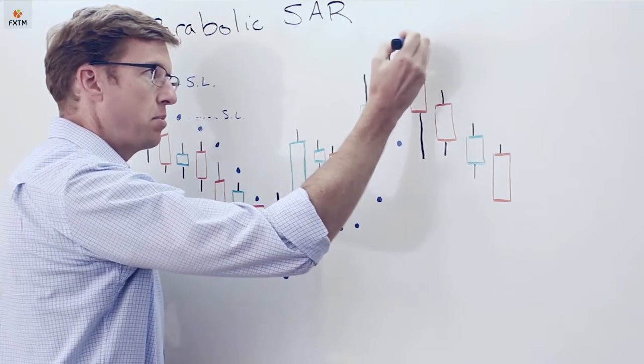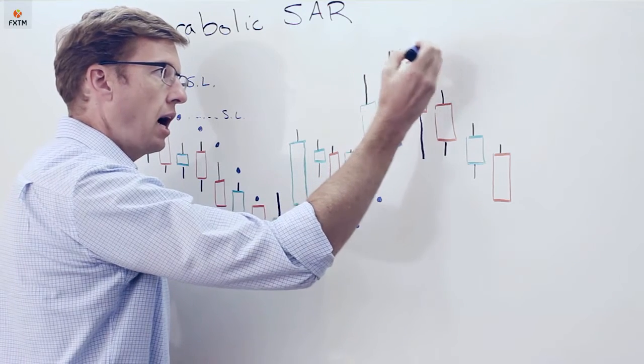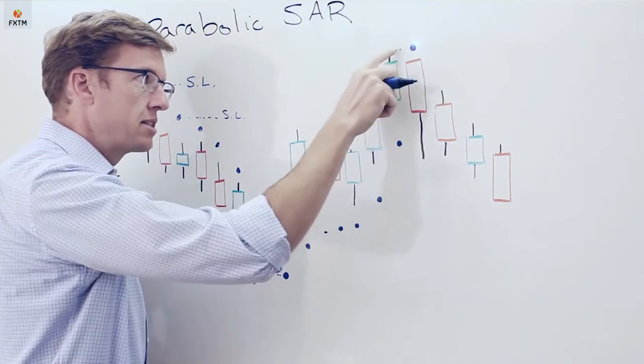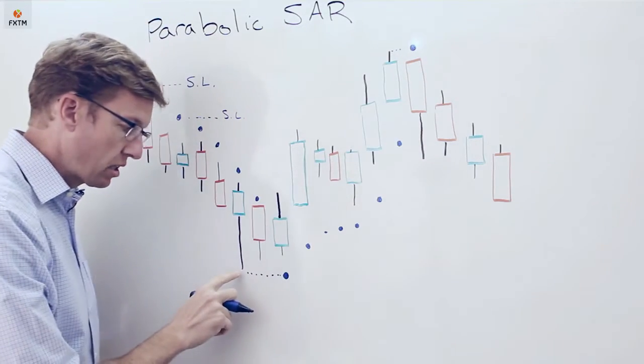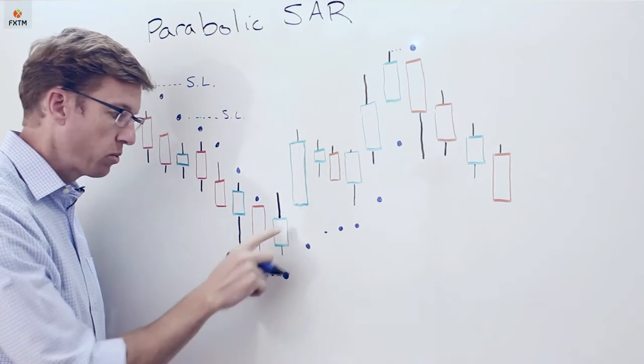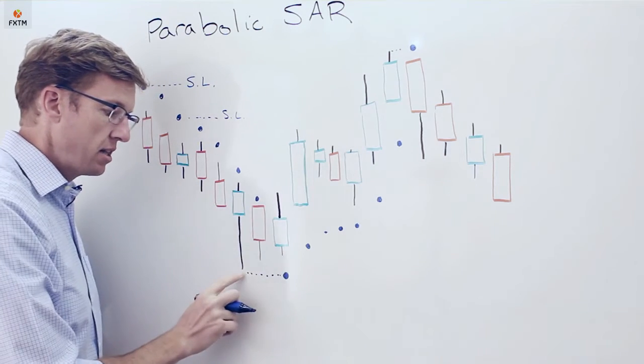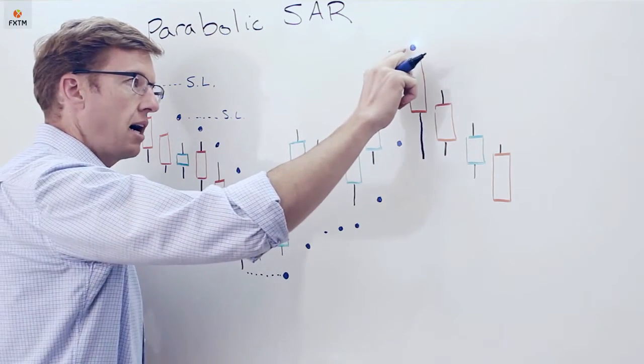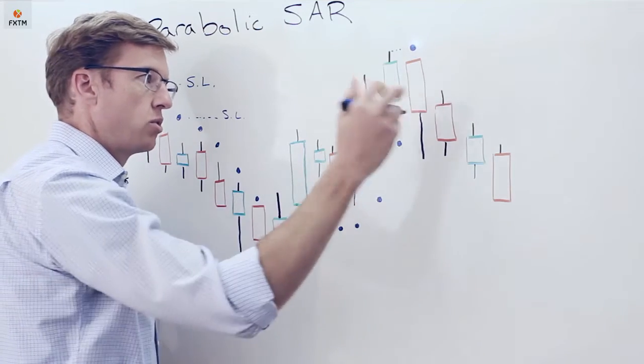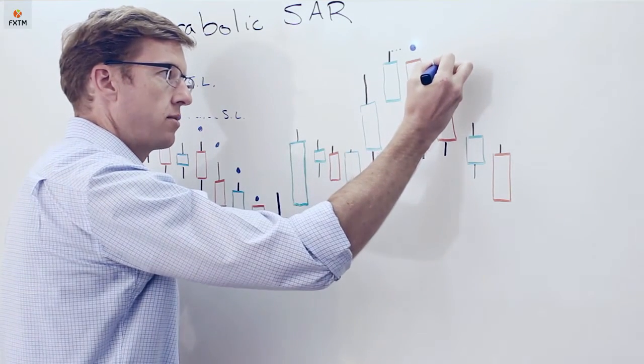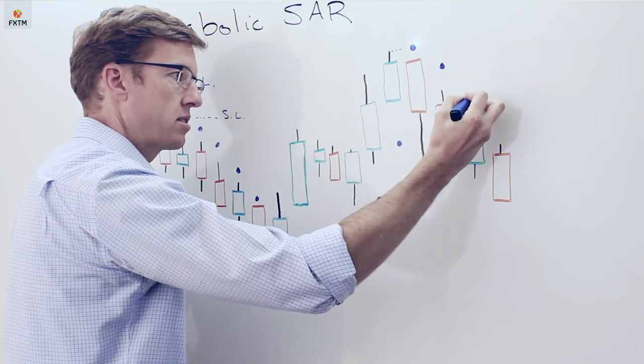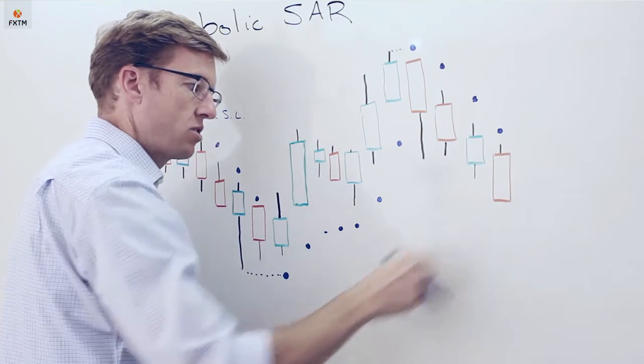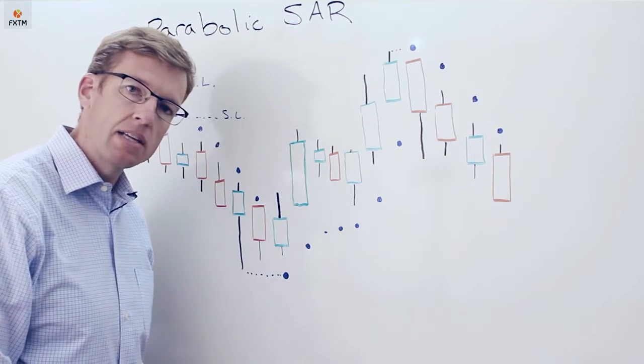Those dots that were drawn underneath the price chart are now going to be flipped up above the price chart, equal to the highest high before that reversal. What's important here is the concept: it's the lowest low in the case of a flip from bearish into bullish, or the highest high in the case of a flip from bullish into bearish. That stop and reversal dot is then drawn above each day as it continues to move to the downside.